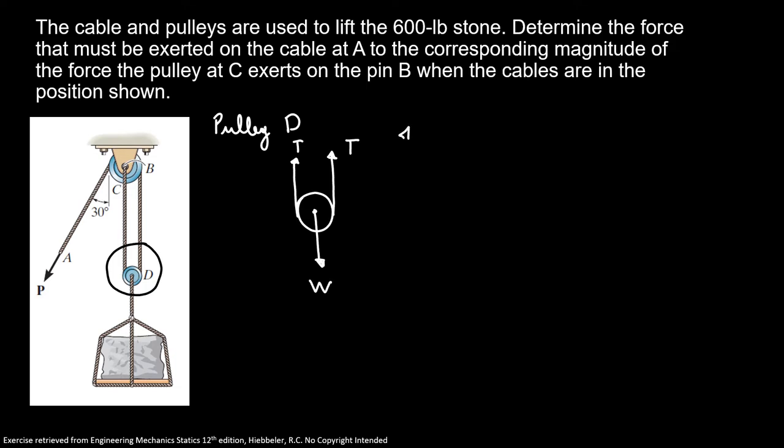If you do sum of the forces in Y equals 0, we have 2 times tension minus weight equals 0. So we know our tension equals weight over 2. Our tension equals 600 divided by 2, so our tension equals 300 pounds.